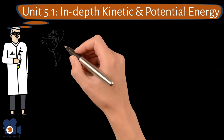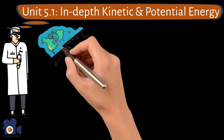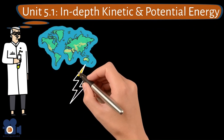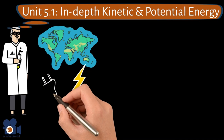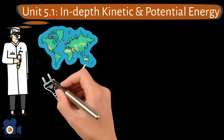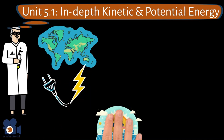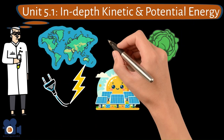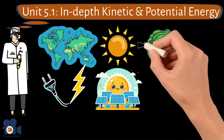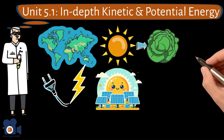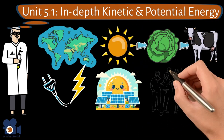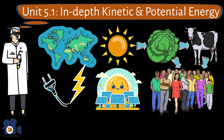Our entire world is connected through types of energy, and we would not survive without it. At the core of it, our energy comes from the sun — and I'm not just talking about solar panels. It could be from the food cycle, with plants getting their energy from the sun, herbivores getting their energy from plants, and then us getting our energy from both of these sources.